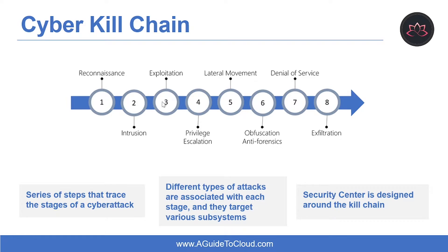The third step is Exploitation. This phase involves exploiting vulnerabilities and inserting malicious code onto the system to get more access. The fourth step is Privilege Escalation, where attackers try to gain administrative access to compromised systems so they can access more critical data and move on to other connected systems.